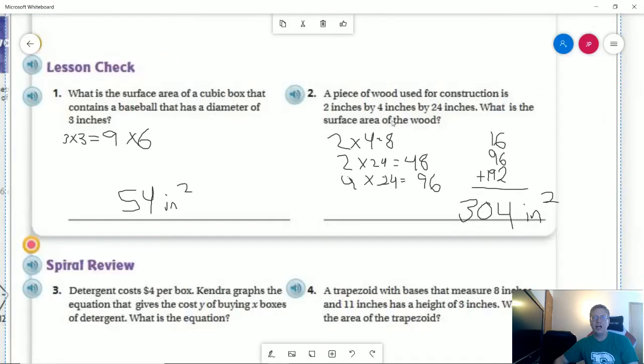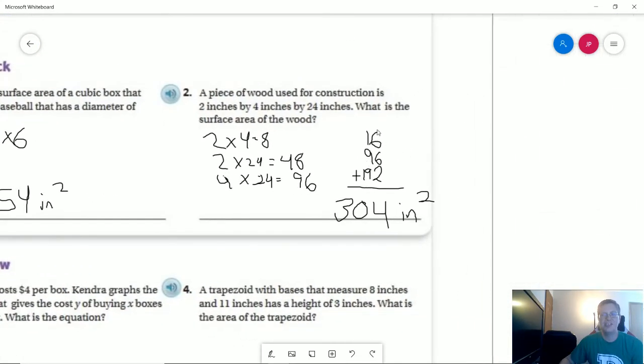And then our last problem, number two. We are going to have two sides that are 2 by 4. We are going to have two sides that are 2 by 24. We're going to have two sides that are 4 by 24. And so if I take all of these three numbers, double them, and then add them together, I get 304. I actually took the time to do this one because I was trying to do it in my head and for some reason I got 308 and I was like that can't be right. So maybe taking a little extra step to write that down just to make sure I don't make a mistake and tell you guys the wrong answer.